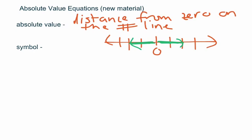The symbol for absolute value is two vertical lines. I want to give the caution: make sure that they don't look like ones. Sometimes students will get really lazy and write them too small. I can't tell aside from context whether that is the absolute value of two or the number 121. So you do want to make sure that your absolute values look different from your ones — they're usually a little bit taller.